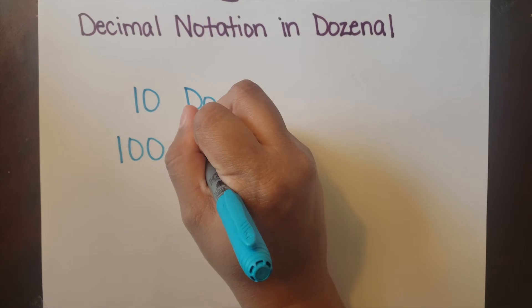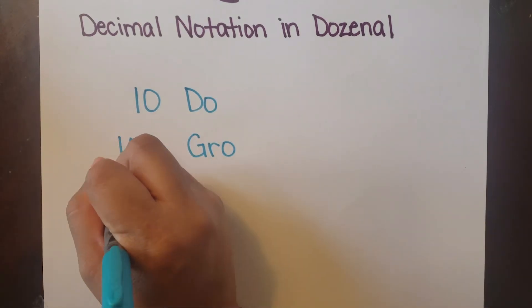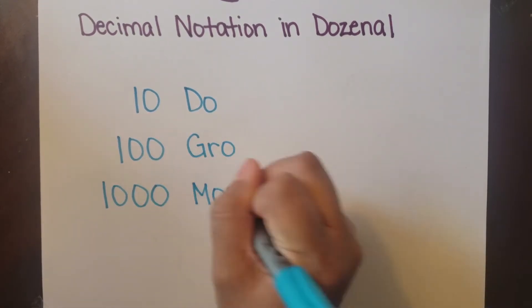One zero is one doe, one zero zero is one grow, and one zero zero zero is one mo.